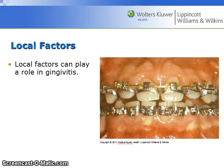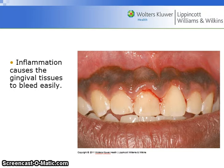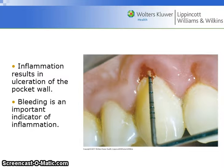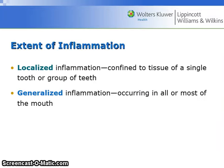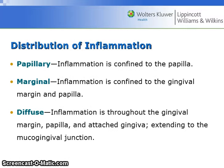Local factors can play a role in gingivitis. Inflammation causes the gingival tissues to bleed easily; inflammation results in ulceration of the pocket wall, and bleeding is an important indicator of inflammation. The extent of inflammation can be localized or generalized. Localized inflammation is confined to tissue of a single tooth or group of teeth, while generalized inflammation occurs in all or most of the mouth.